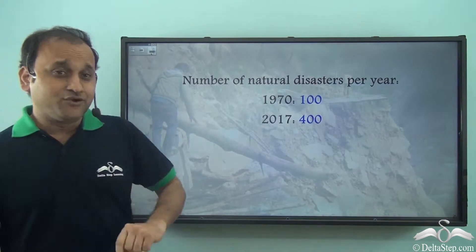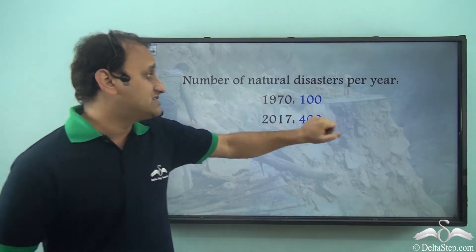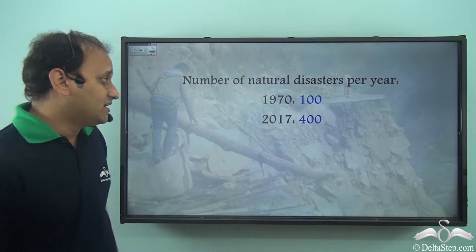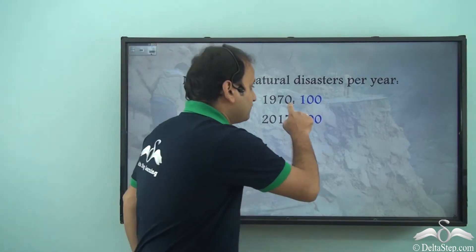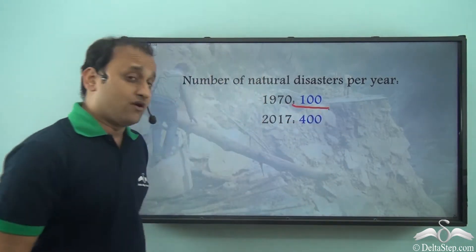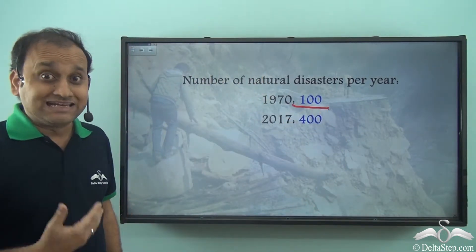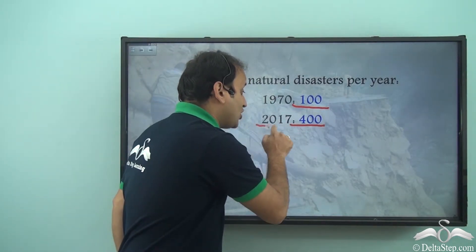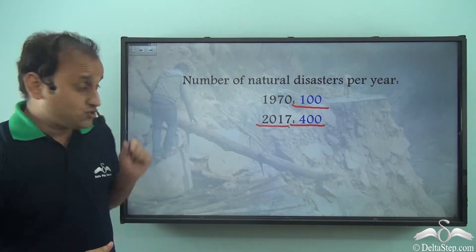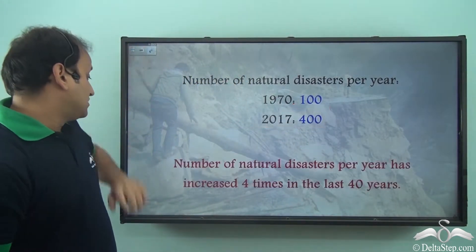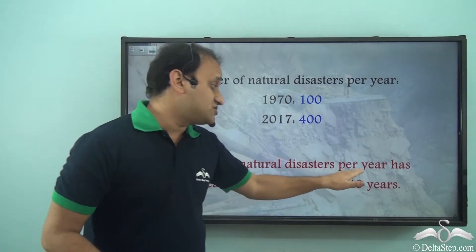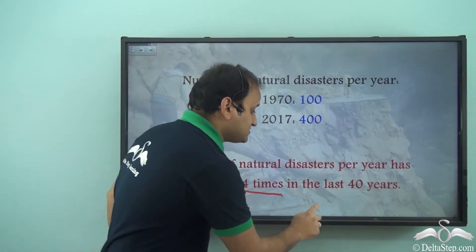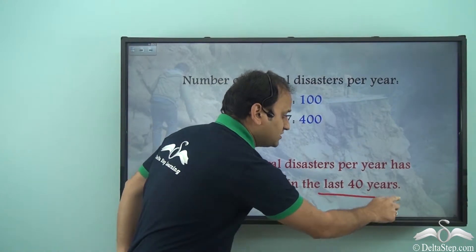If we notice, the number of natural disasters per year in 1970 was only 100, which increased to 400 in 2017. So the number of natural disasters per year has increased four times in the last 40 years.